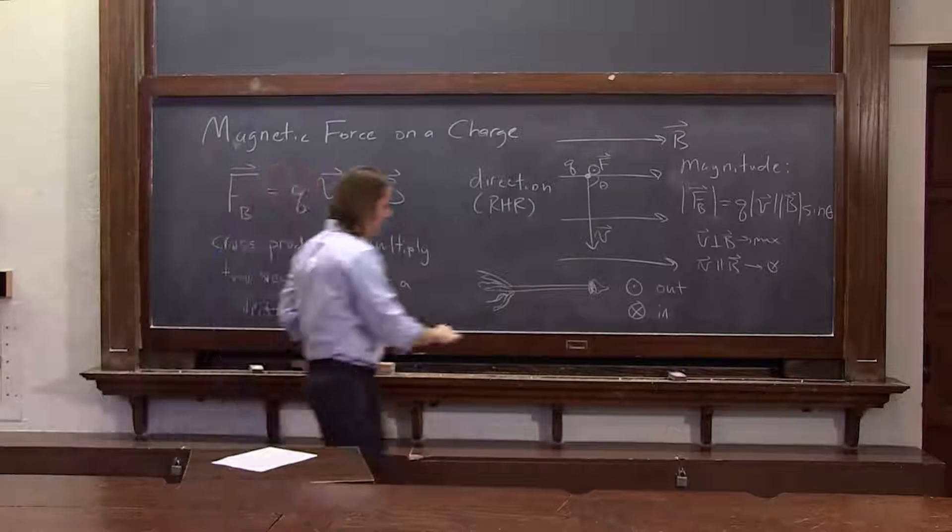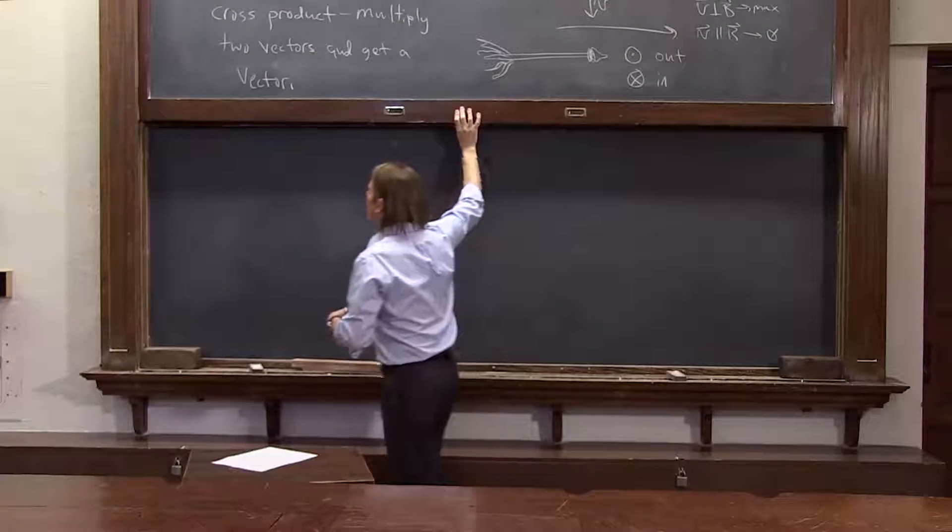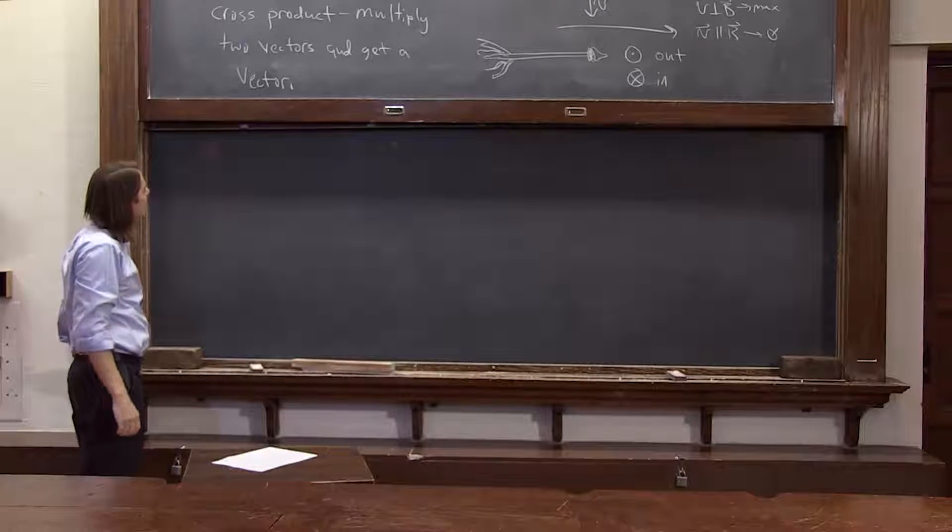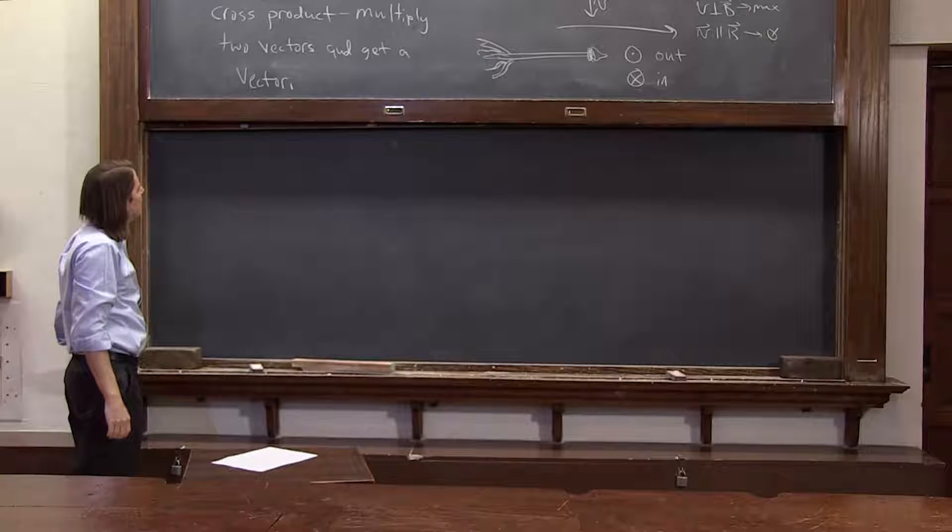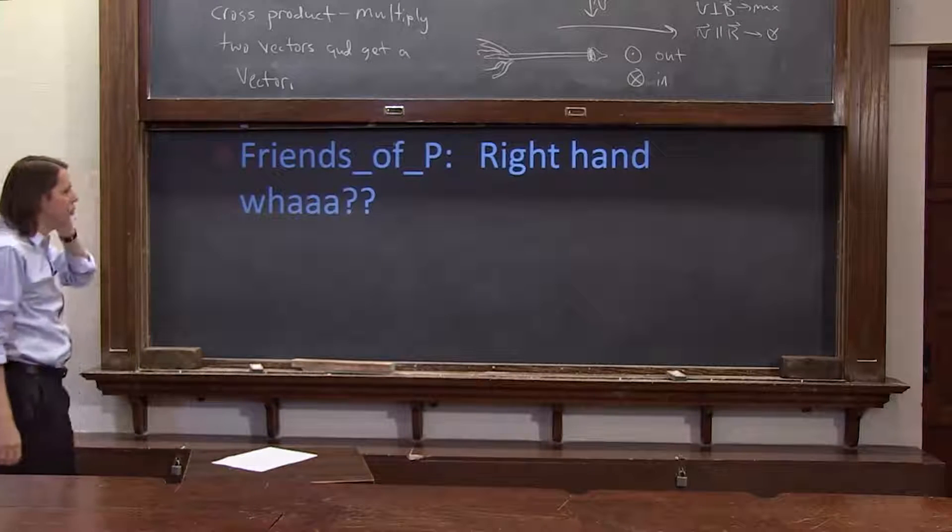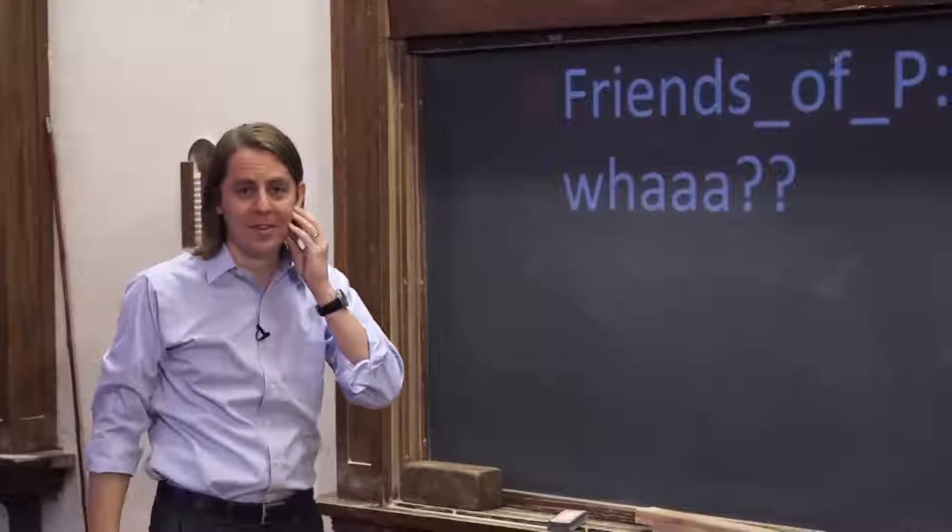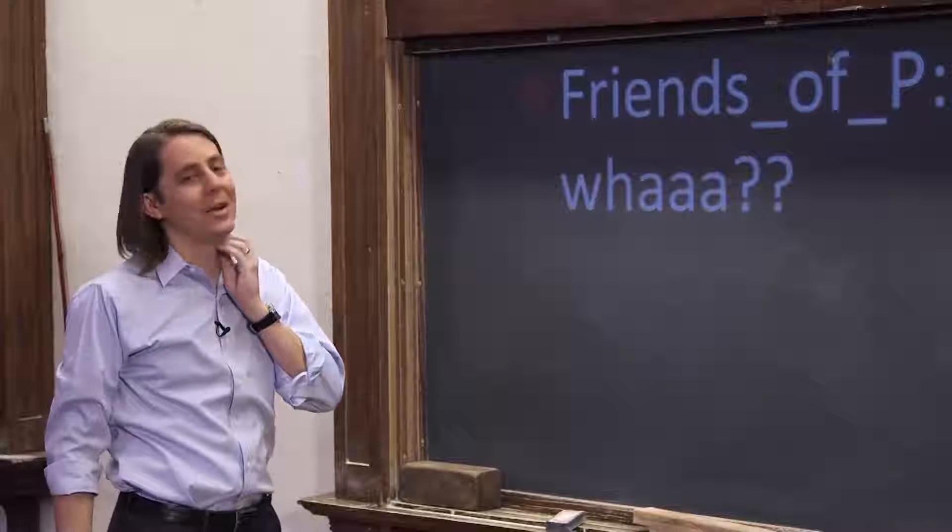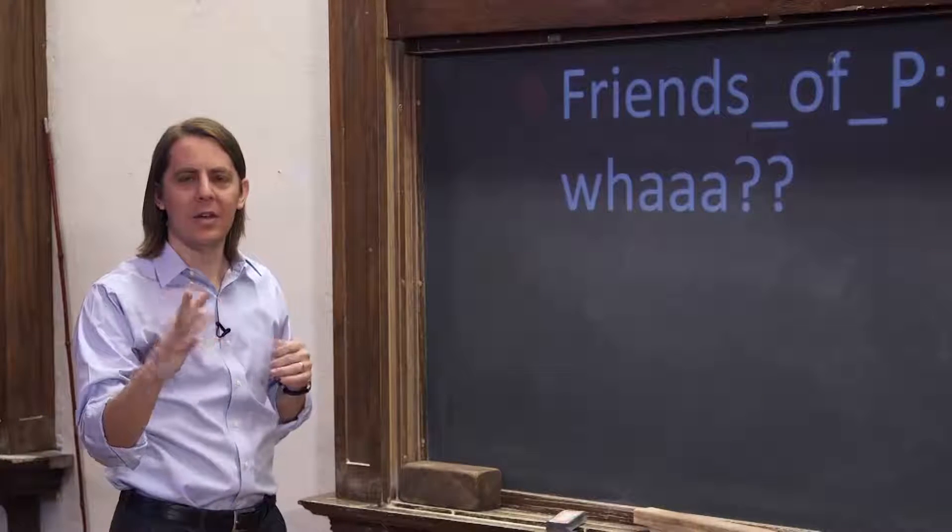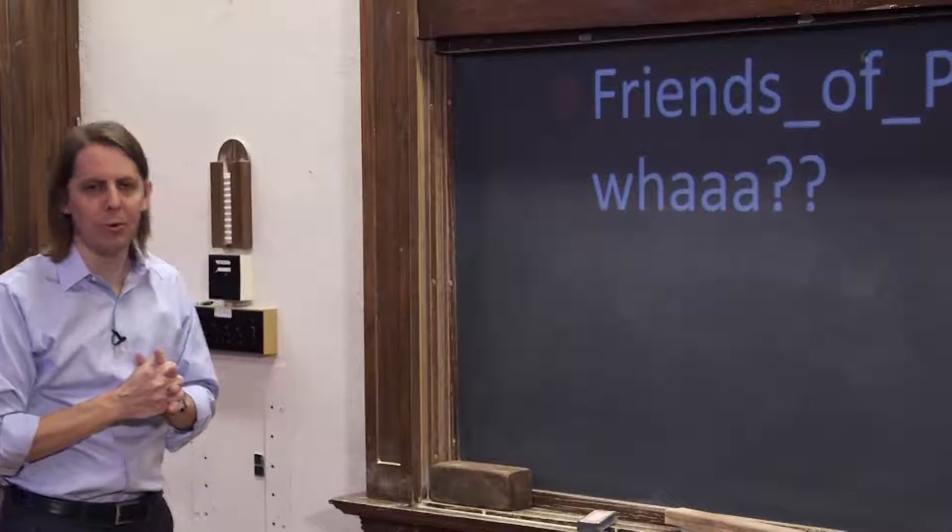And I see we have a question. Let's see here. Oh, friends of P, right-hand, what? Oh yes, the right-hand rule. You're going to be very good at the right-hand rule. To understand anything about magnetism requires constant use of the right-hand rule. It's a way to use your hand to figure out what direction something's going to be. We'll take a break, and we'll think about the right-hand rule for a little bit.